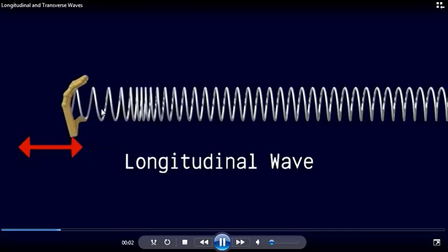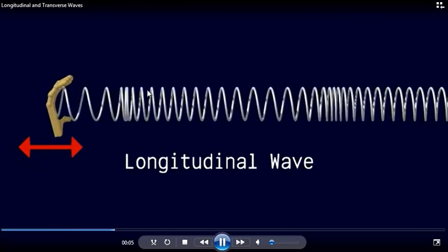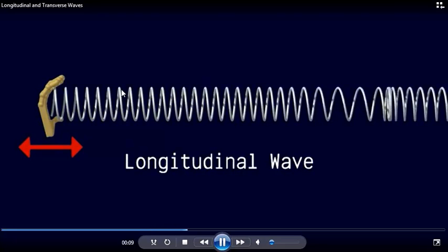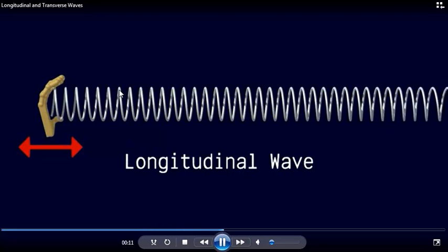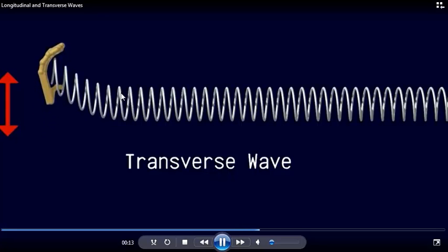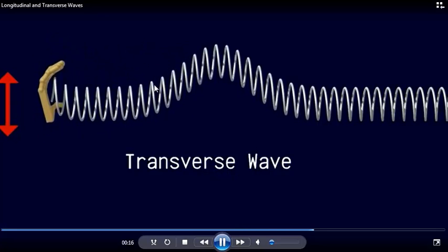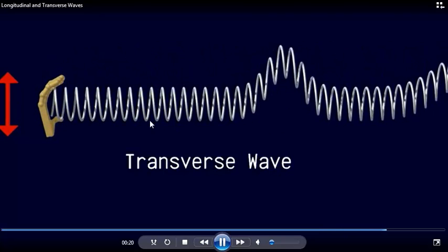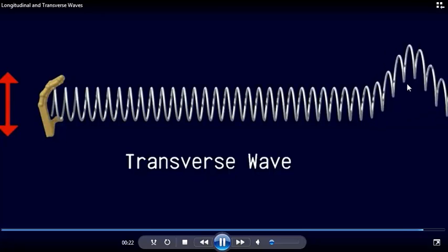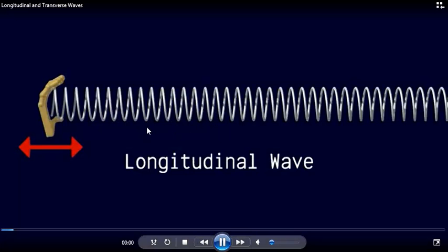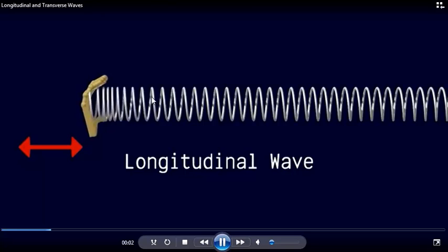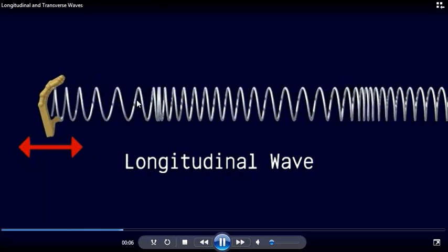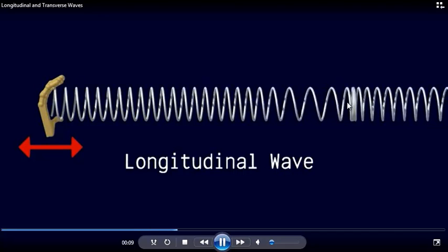Here we've got a wave called a longitudinal wave. If we look at one of these coils of the spring, you'll see that the coils move back and forth along the direction of the pulse. So longitudinal — the coils move back and forth parallel to the direction of the wave pulse. Here's the pulse going along.